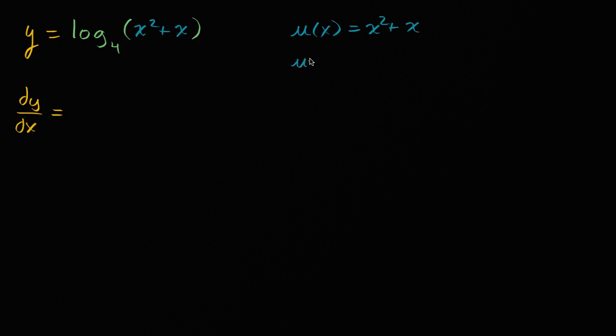And it's going to be useful later on to know what u prime of x is. So that's going to be, just going to use the power rule here. So two x plus one, brought that two out front and decremented the exponent, derivative with respect to x of x is one.